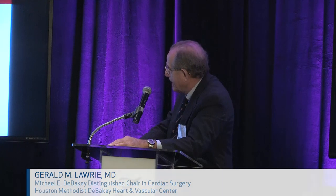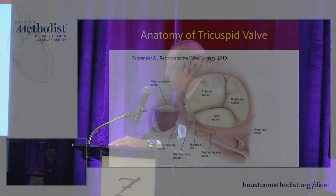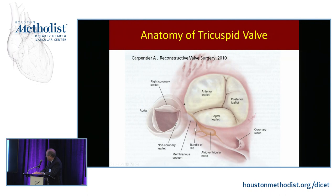The conduction system is right nearby. We have the tendon of Tadero running from the central fibrous body to the coronary sinus. Dropping a vertical line down creates the triangle of Koch, and inside the triangle of Koch is the AV node. Going more anteriorly, within four or five millimeters of the end of this commissure, you must carefully avoid the bundle of His, which runs right there and goes down just around the membranous septum.